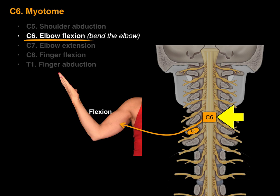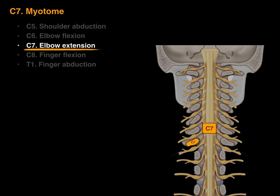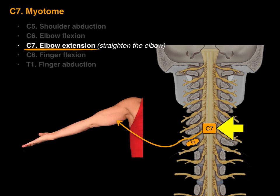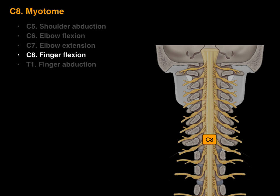The C7 myotome is elbow extension, which means to straighten the elbow. There's the C7 spinal cord level and the C7 vertebra, and the motor neuron goes out primarily to the triceps muscles. That movement — straightening the elbow — is associated with the C7 myotome and spinal cord level.